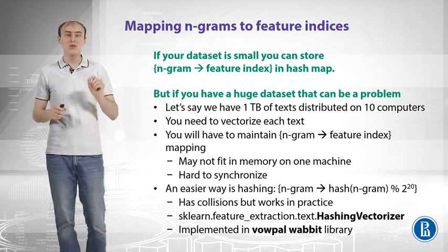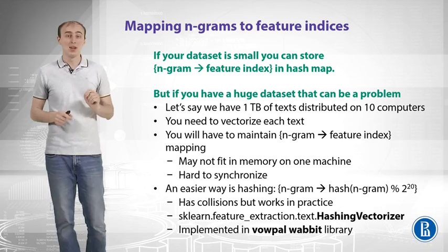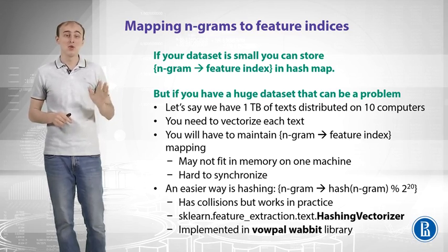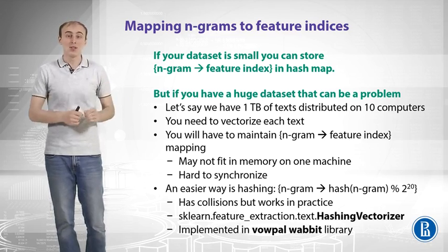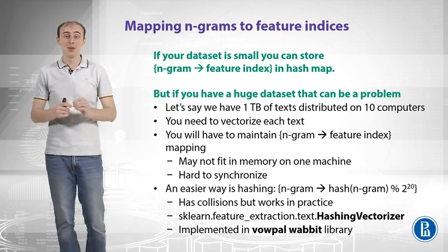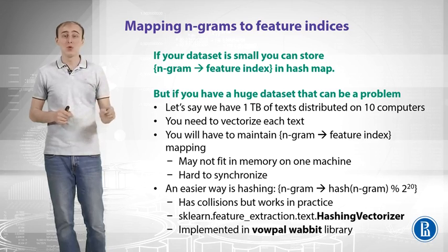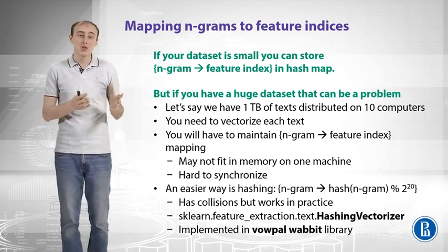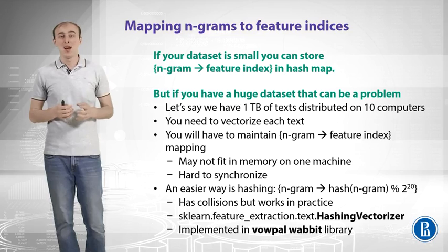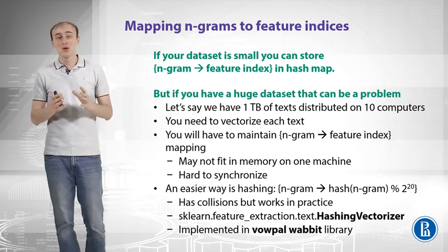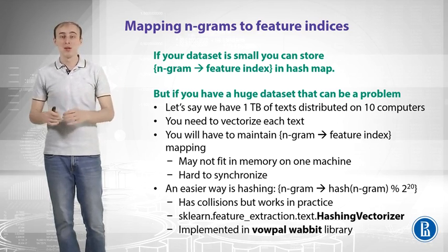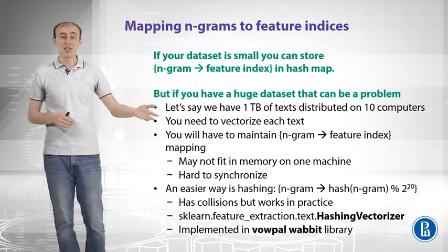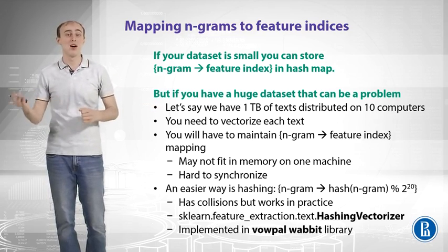That can actually lead to bad scaling of that workload. There is an easier way: you can throw away the hash map and just replace it with hashing. That means you take an n-gram, compute its hash value, and take that value modulo 2 to the 20, or 2 to the 22, or any other large number. A hash function converts an input into some number — you can give it different strings and it will output different numbers.